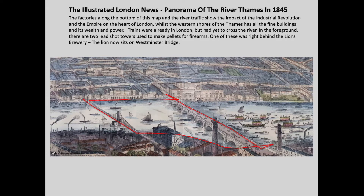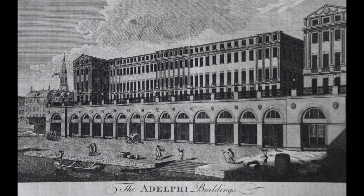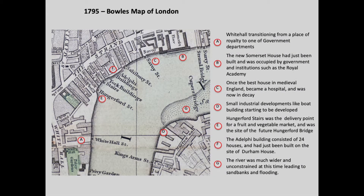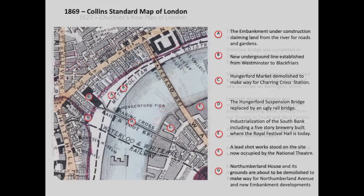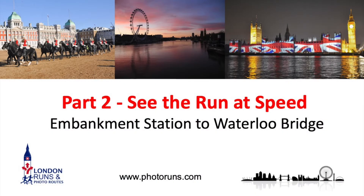In the map of 1845, you can see the brewery and two lead shot towers. Somerset House has been built into its current form, and you can also see the Adelphi. By 1795, there's some industrialisation going on along the south bank, plus quite big sandbars which were problematic in terms of flooding. By 1827, just before the building of the embankment, the river is still pretty wide. By 1869, the Victoria Embankment on the north is being built, but nothing was built on the south bank — that wouldn't happen until 1951 and the Festival of Britain.